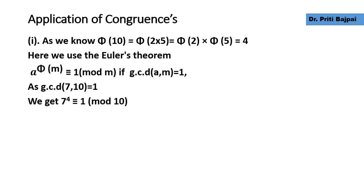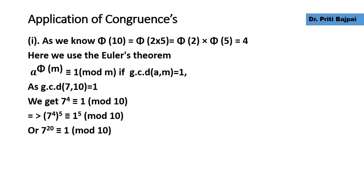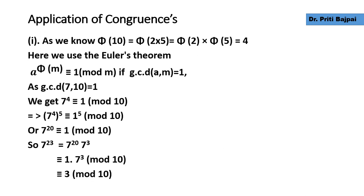So 7 to the power 4 is congruent to 1 mod 10. If we raise both sides to the power 5, we get 7 to the power 20 is congruent to 1 mod 10. Our original question asks for 7 to the power 23, which can be written as 7 to the power 20 times 7 to the power 3. Since 7^20 ≡ 1, we are left with 7^3 = 343. Dividing 343 by 10, the last digit is 3.